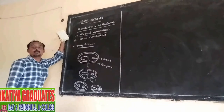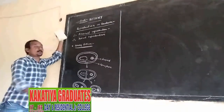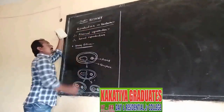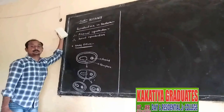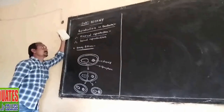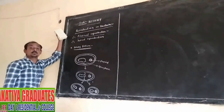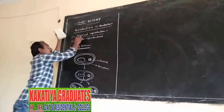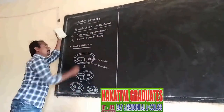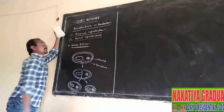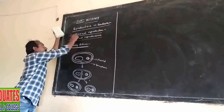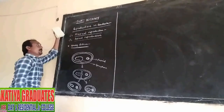Today I am discussing the topic of reproduction in bacteria. In bacteria, they reproduce by two methods: first is asexual reproduction and second is sexual reproduction.